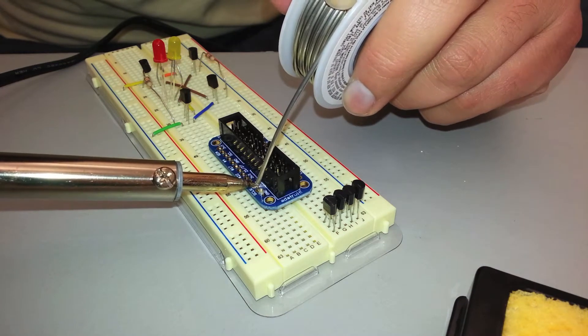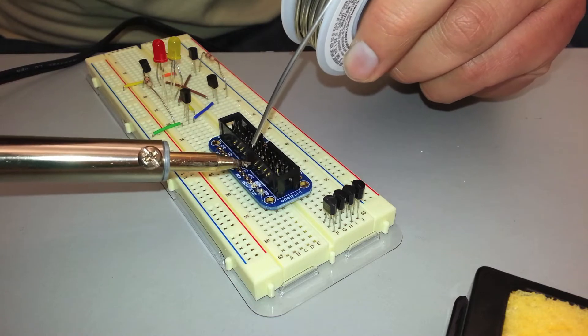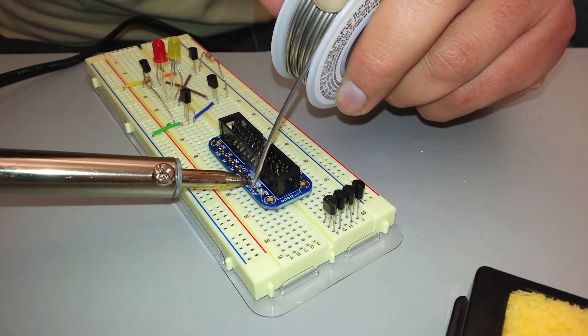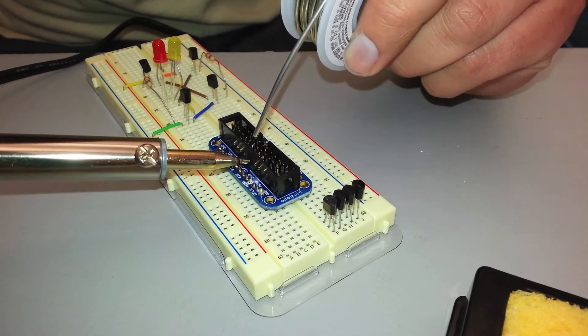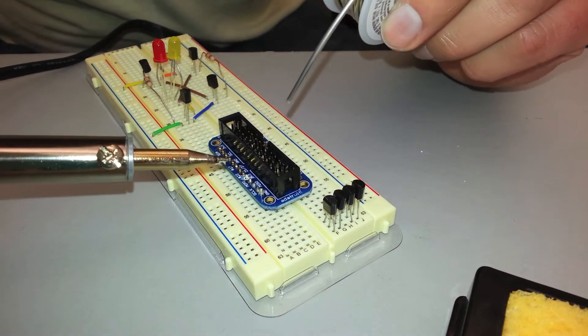If you do get too much, then you use de-soldering braid to remove the excess and I will show you how to do that in a second because I got too much on the second pin here. And then you just go one by one.